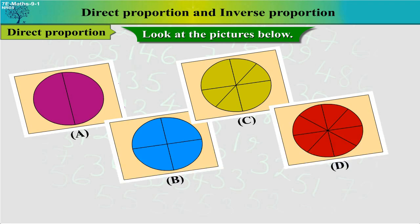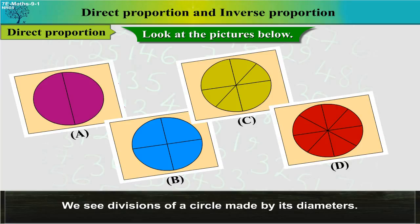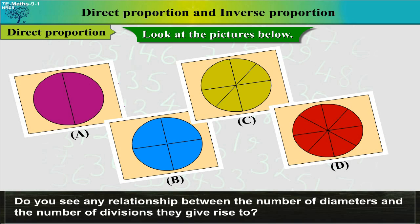Look at the picture below. We see divisions of a circle made by its diameters. These are the figures. Do you see any relationship between the number of diameters and the number of divisions they give rise to?